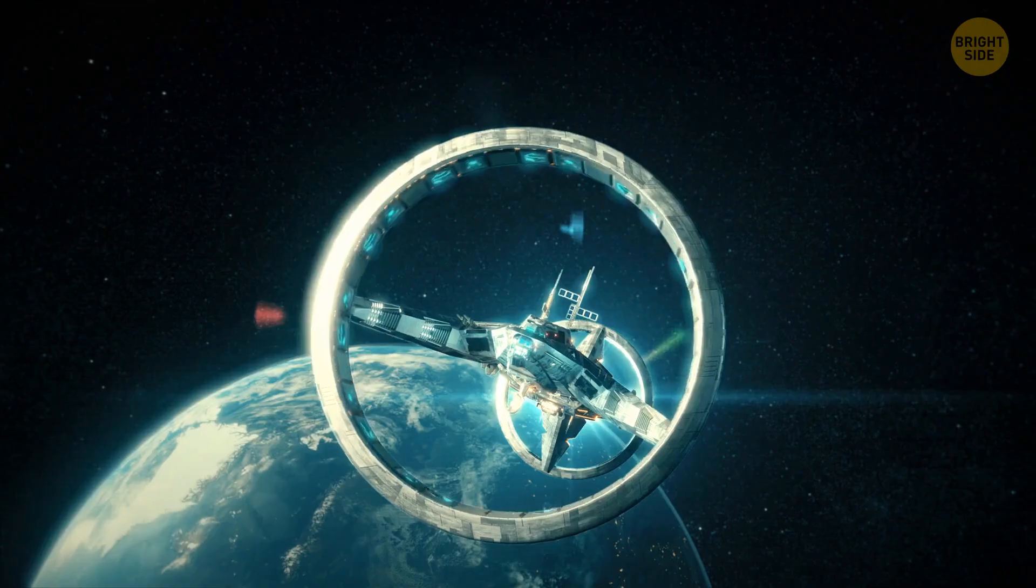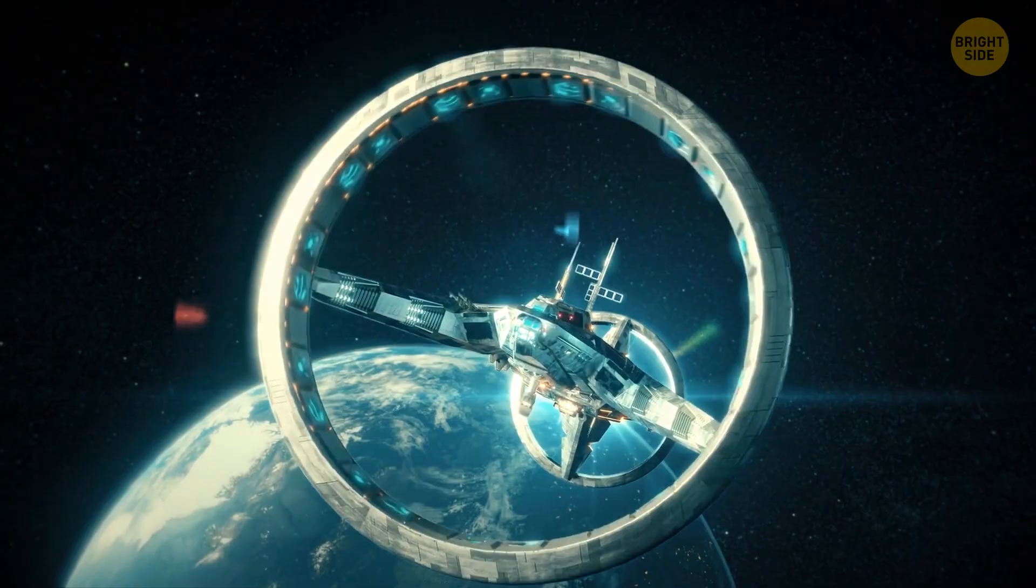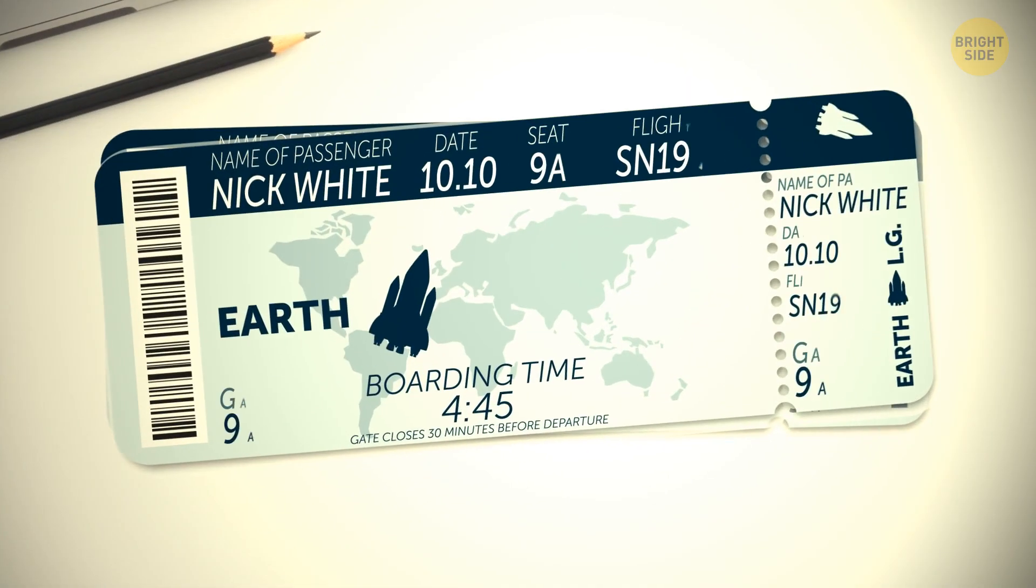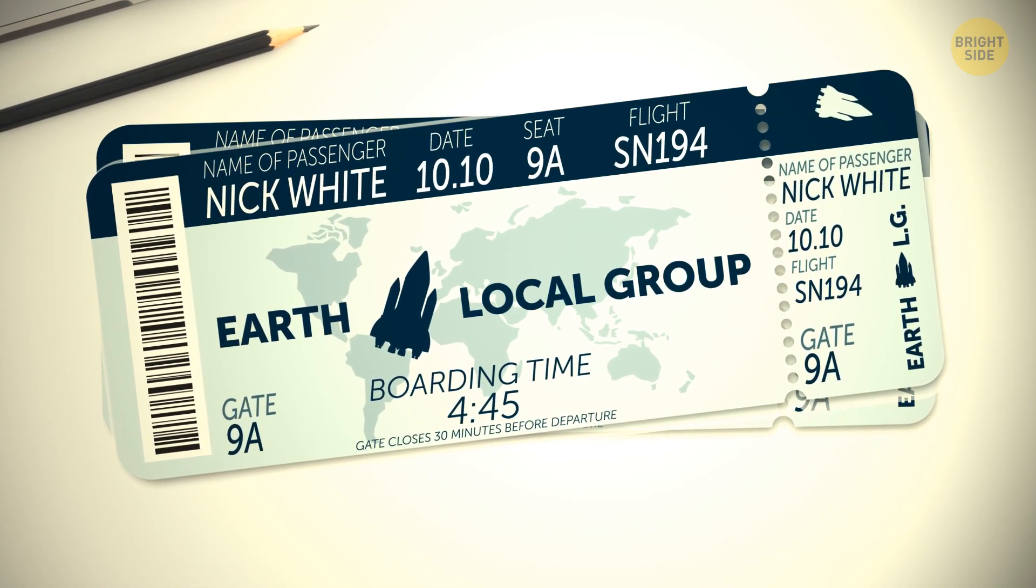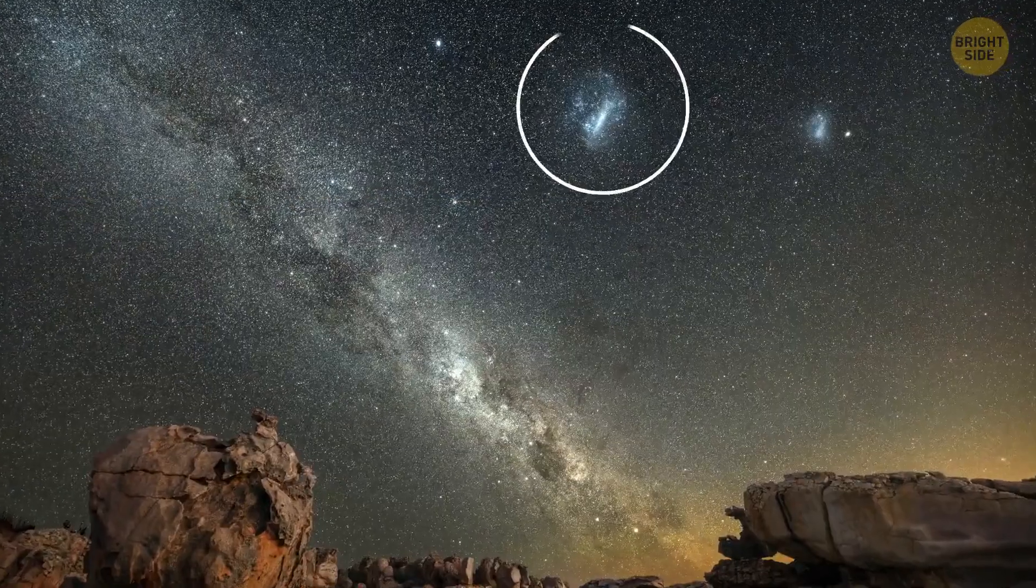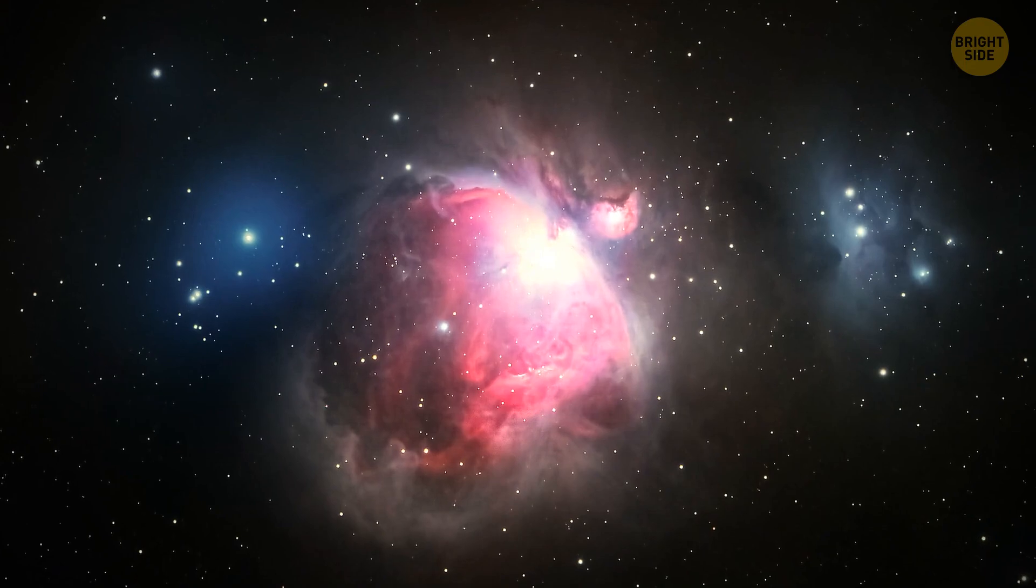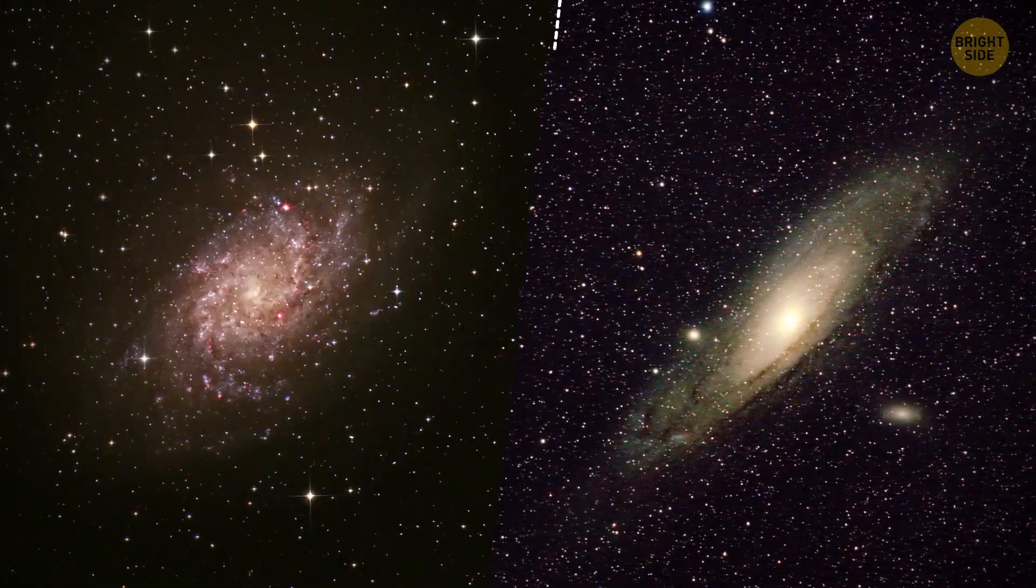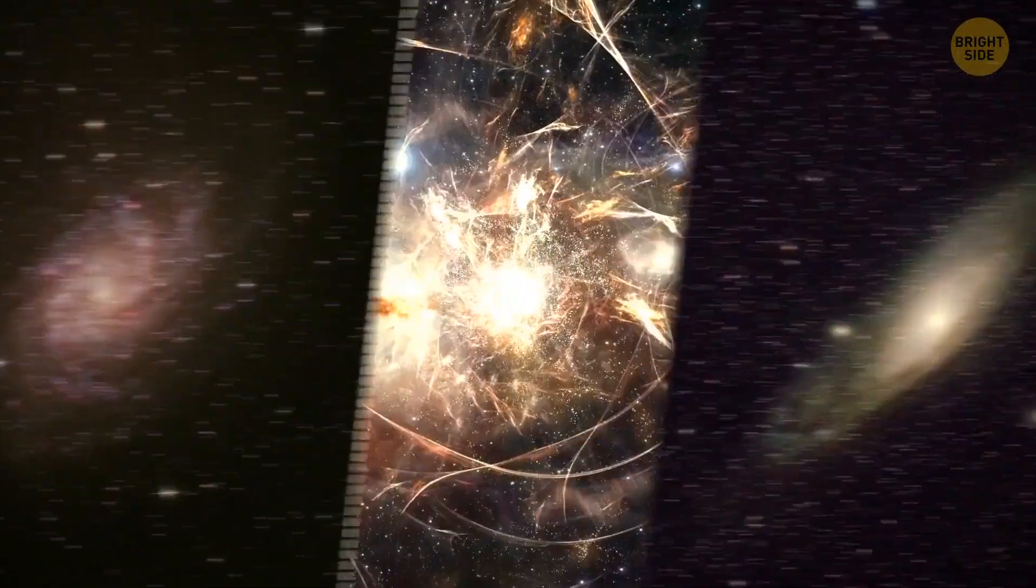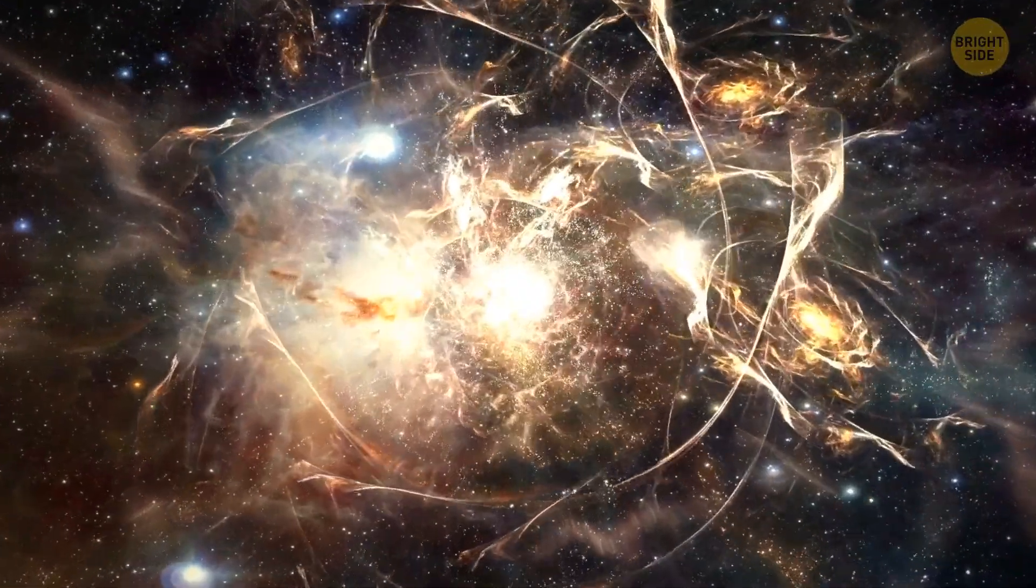All aboard! This is the Intergalactic Cruiser. The destination on your ticket is a tour of the local group of galaxies, featuring the large and small Magellanic Galaxies, the Orion Nebula, the Andromeda and Triangulum Galaxies, and a few surprises in between. Tickets, please!